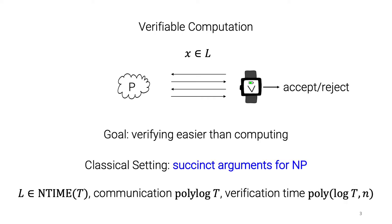In the classical setting, we have such argument systems, and they're called Succinct Arguments for NP. What's known is that for any NP language L, say in time t, there is an interactive argument system for deciding L where the communication in the protocol is polylog t, so very short, and the verification time is polylog t and some fixed polynomial in the input length.